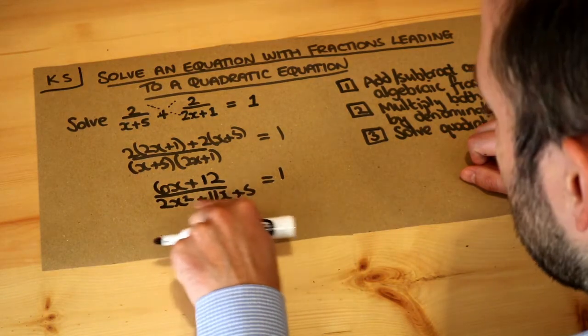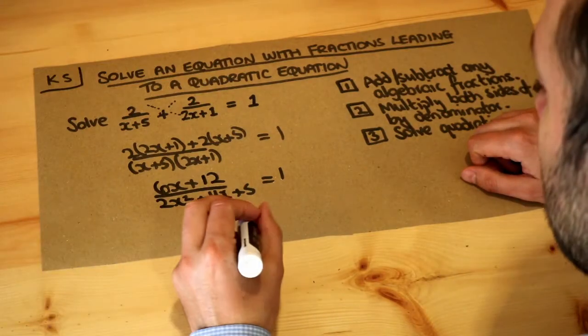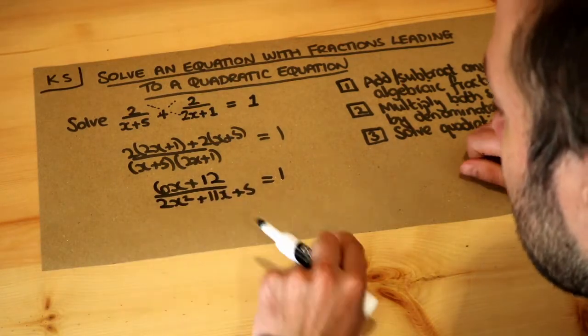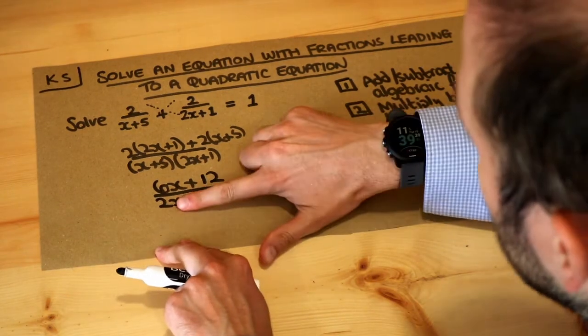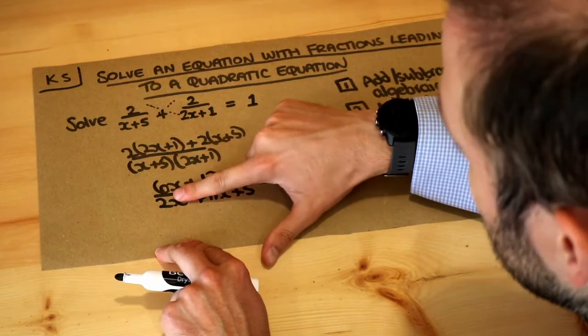Whenever we have a fraction in an equation, we should multiply through by the denominator so that we don't have a fraction anymore. We're going to multiply through by this. If we multiply the left-hand side of the equation by (2x² + 11x + 5).